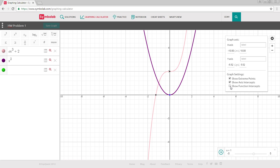By selecting the different graph settings, you can see extreme points, axes intercepts, and function intercepts on the graph.